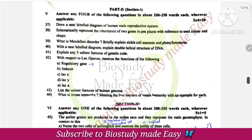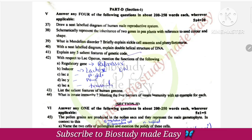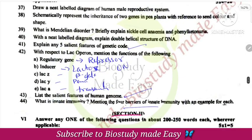In the Lac operon: the regulatory gene makes the repressor protein. The inducer, which is lactose, switches it on. The operon then activates: Lac Z produces beta-galactosidase, Lac Y produces permease, and Lac A produces transacetylase.